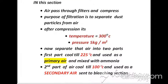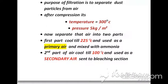We then separate the air into two parts. The first part is cooled to 2 to 5°C and will be used as primary air, which is then mixed with ammonia. The second part is cooled to 100°C and will be used as secondary air, sent to the bleaching section.